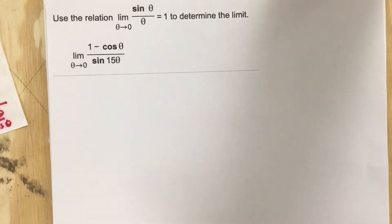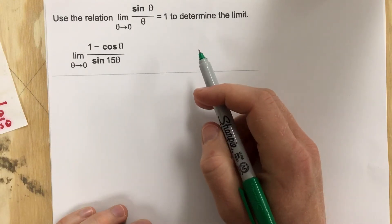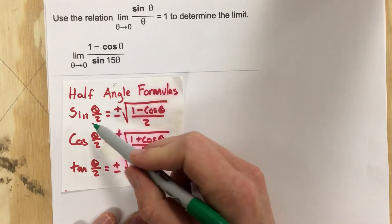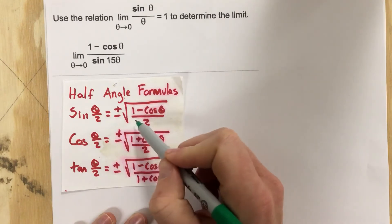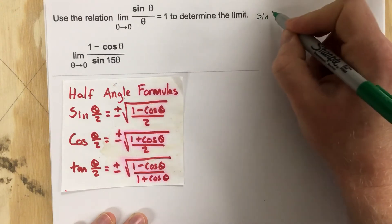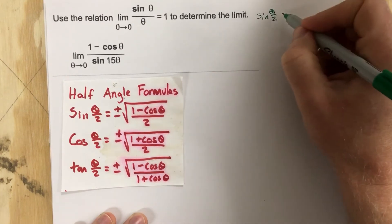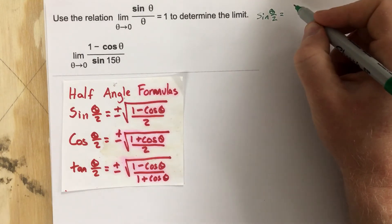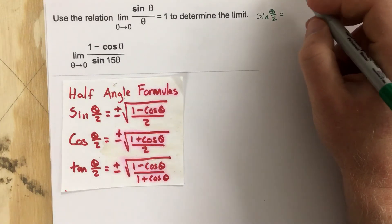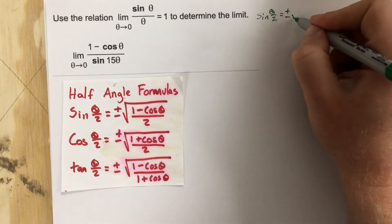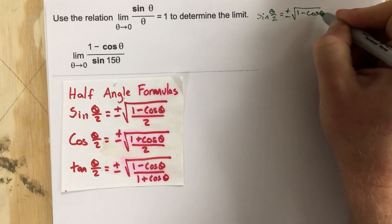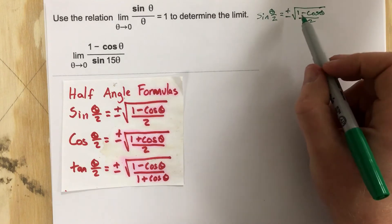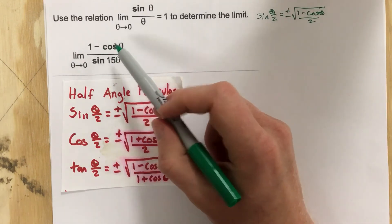The half angle formulas seem to be the ones we want to use. Specifically, sine theta over 2 equals plus or minus the square root of 1 minus cosine theta all over 2. We can see 1 minus cosine theta is inside the radical. We want to isolate it on one side so we can replace 1 minus cosine with a version of sine.